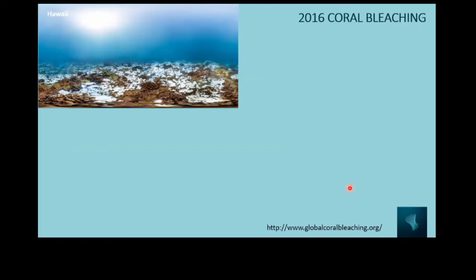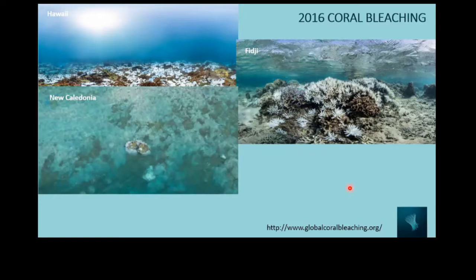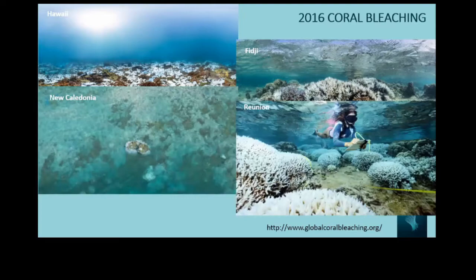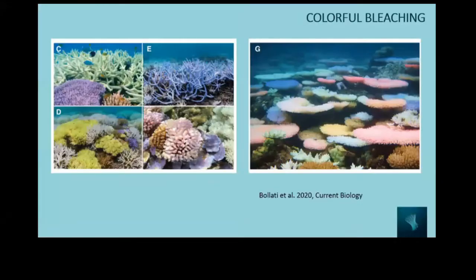The 2016 bleaching event is believed to have been the worst ever, with examples from Hawaii, Fiji, New Caledonia, La Réunion, and the Great Barrier Reef. But researchers also realized that after these extreme global bleaching events, some corals suddenly started to be colorful. Someone unfamiliar with the topic might think it's a beautiful colorful reef, but actually this is also a sign of stress — it only happens during or after coral bleaching.